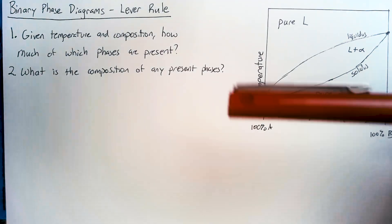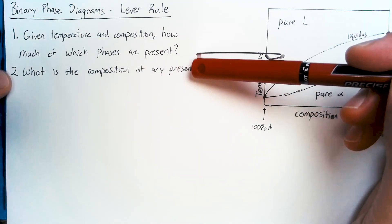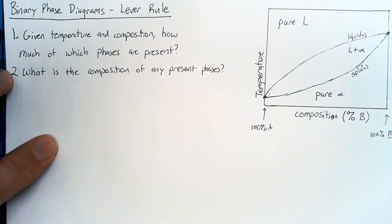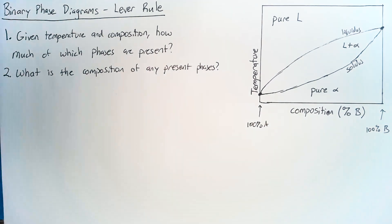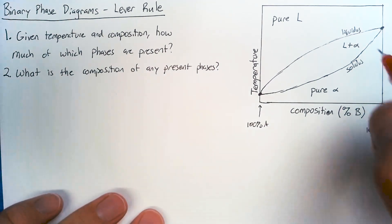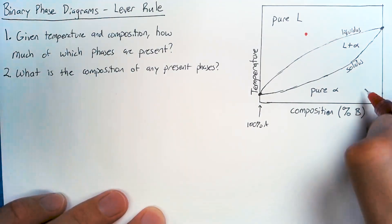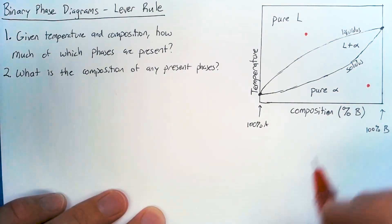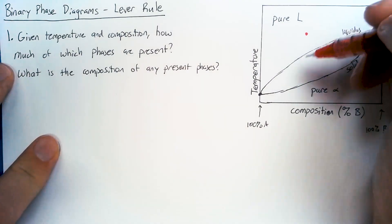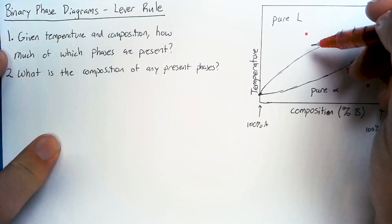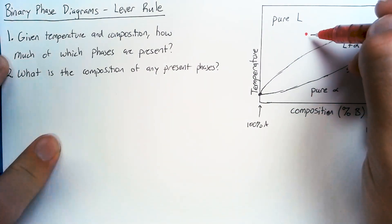So let's answer these two questions for the easy cases. And the easy cases are anytime that we have a pure liquid. So maybe this point right here, anytime we have a pure solid, we have a temperature defined and a composition defined. So how much of what phases are present here?